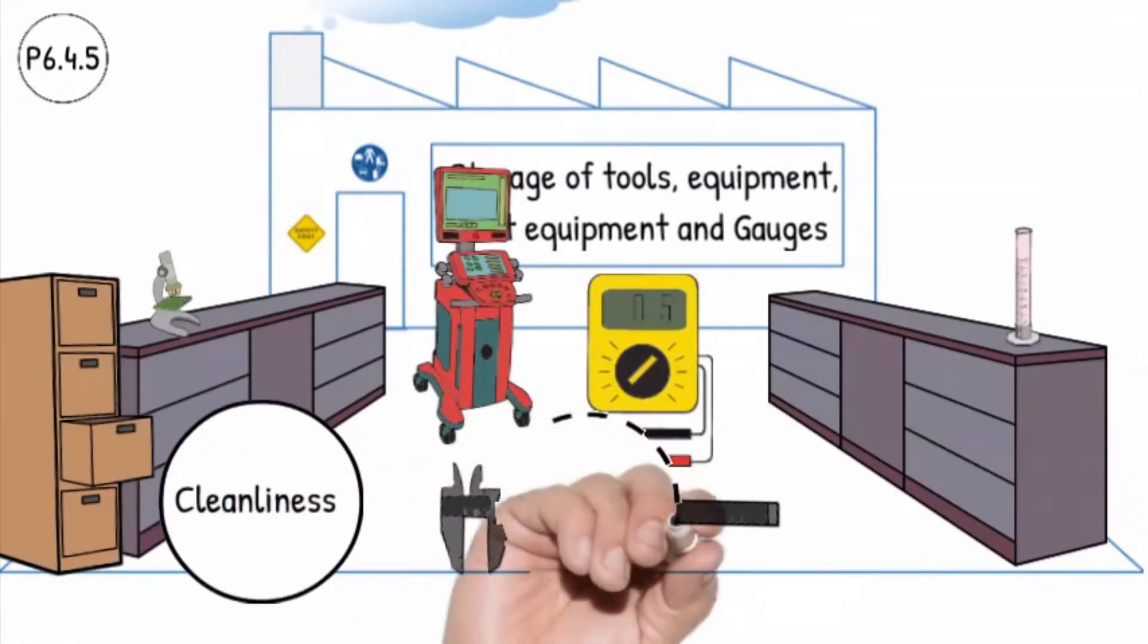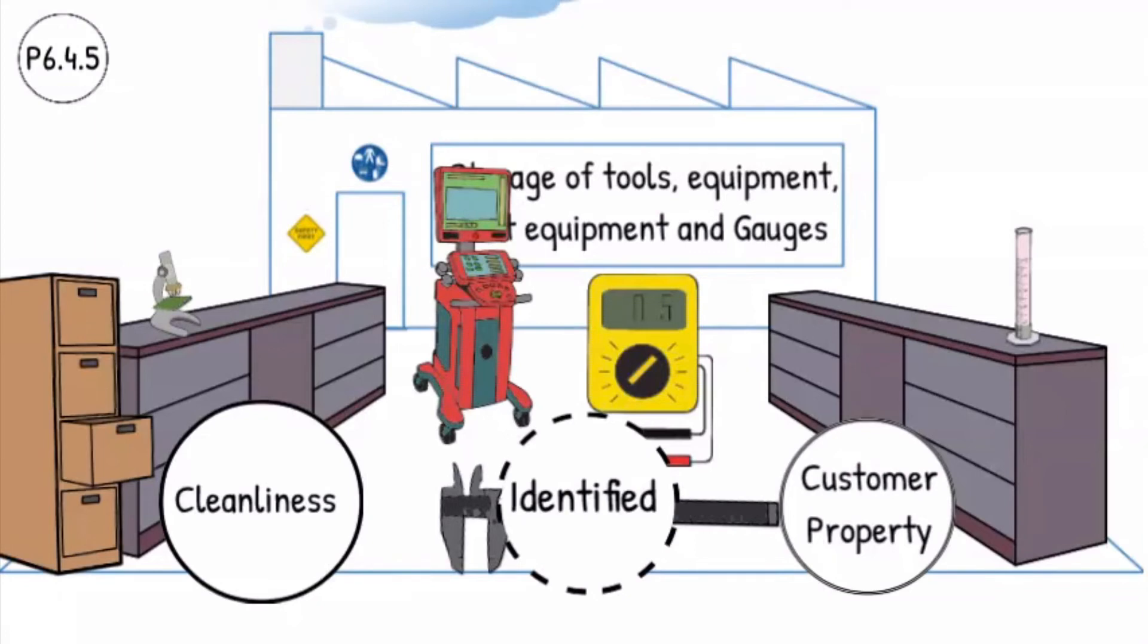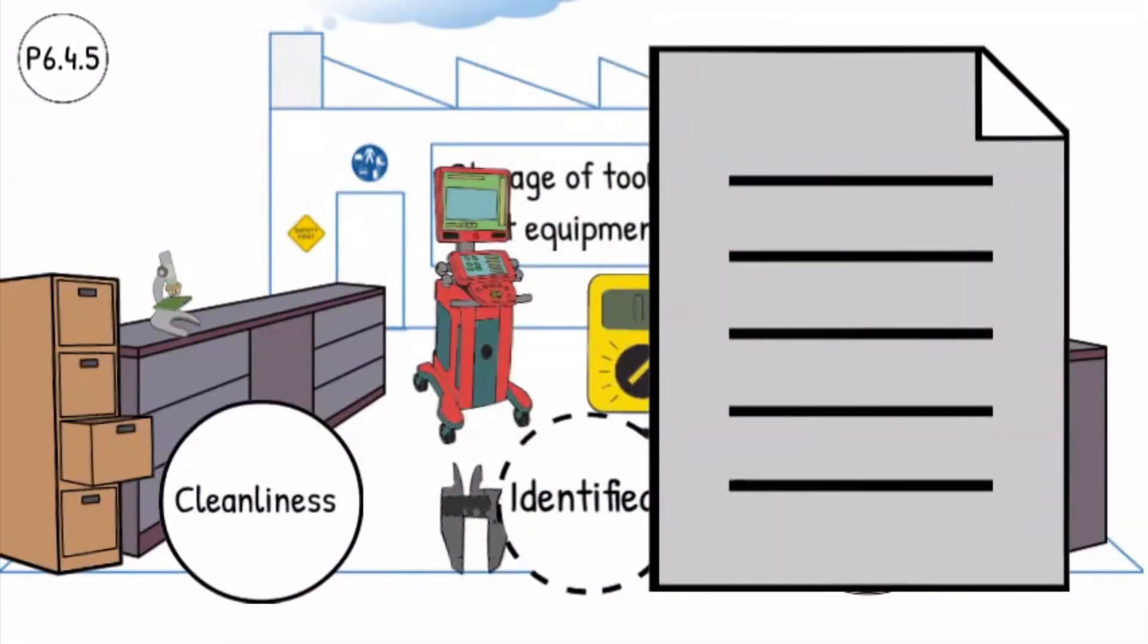All tools, equipment and test equipment are identified showing either if it is internal or customer property, with the current status. All changes are documented in the change history record. The issue and use of this equipment is also controlled and documented.